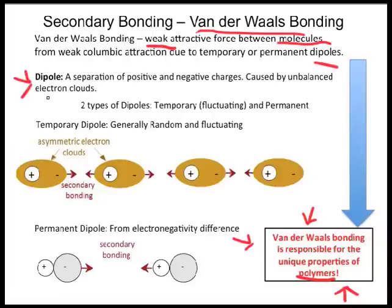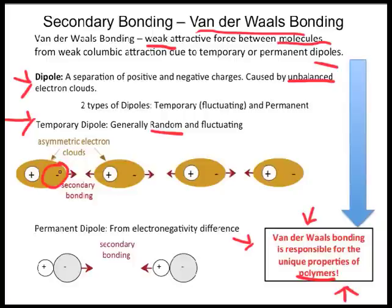A temporary or permanent dipole occurs in a molecule when the electrons become unbalanced, meaning they are not evenly distributed in the molecule's electron cloud. Temporary dipoles occur randomly — since electrons are free moving, sometimes they clump together for an instant by chance, creating a slightly negative charge where they are and a slightly positive charge on the other side. The electrons in this clump repel the electrons in the neighboring molecule, starting a chain reaction of forcing dipoles to happen. The slightly positive charge ends are attracted to the slightly negative charge ends, causing weak van der Waals bonds to form between the molecules.